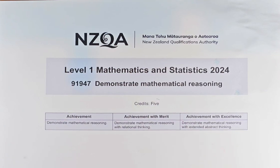Good day! In this video, we are going to try and solve question 3C part 1 of the 2024 Demonstrate Mathematical Reasoning, paper number 91947. This is a 5 credit paper. This question, part 3C part 1, is an achieved question. So without further ado, let's try to solve this.